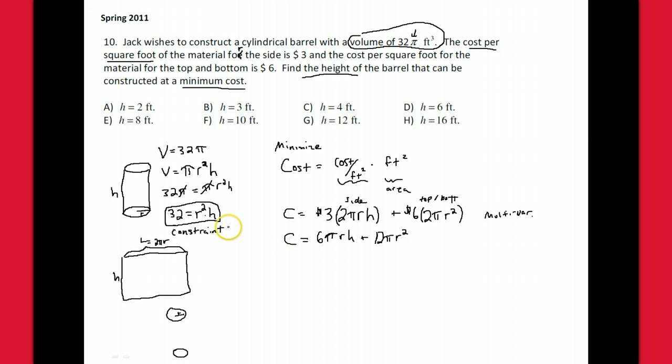We go to the constraint to make it single variable. In the constraint, we can solve for h or r². Let's solve for h though, because h only appears here once. r² appears here and r appears, so we'd have to do something strange like a square root. Take the 32 and divide it by r²—that's what h has to be by our constraint.